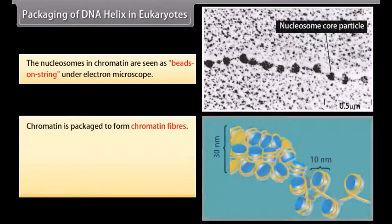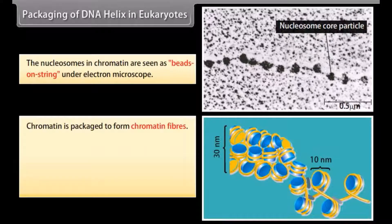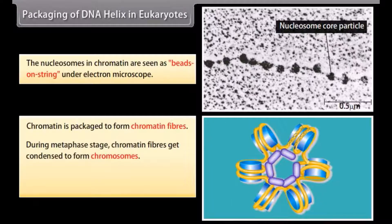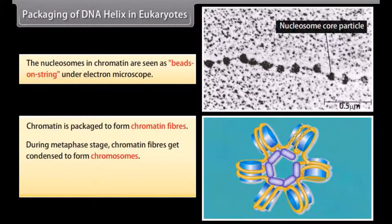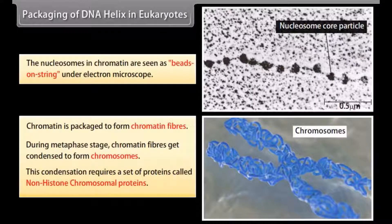Chromatin is packaged to form chromatin fibers. During the metaphase stage, chromatin fibers get condensed to form chromosomes. This condensation requires a set of proteins called non-histone chromosomal proteins.